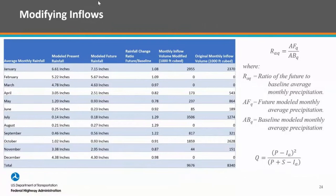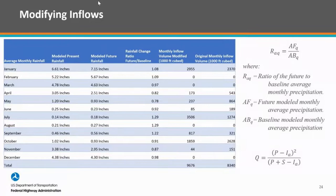One of the things the CMIP tool gives you is average monthly rainfall. I'm going to do what I did with the earlier example. Looking at January: the average monthly rainfall for the current time period is about 6.61 inches, and in the future it's 7.15 inches — about an 8% increase. I can go through and run my calculations, and the volume coming in is going to be closer to 3,000 compared to the original, which was closer to 2,000. We're looking at the very top row — January — and comparing the modified monthly inflow volume versus the original.